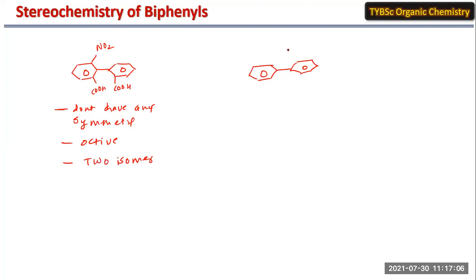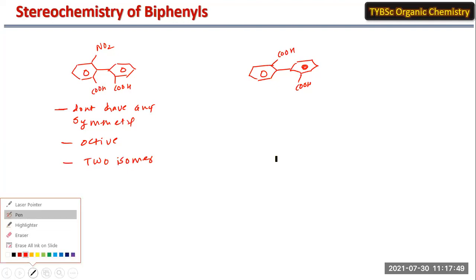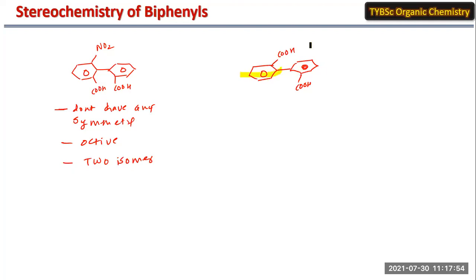The second example is diphenyl-2,2'-dicarboxylic acid, where both rings have only one substituent — COOH — which is a very bulky group. Due to this bulky substituent, rotation around the pivotal bond is restricted. When you pass a plane, the molecule is not divided into two equal halves in either ring. Both rings lack any mirror symmetry on the other side, so the molecule does not have any kind of symmetry and is therefore optically active, possessing two isomers.